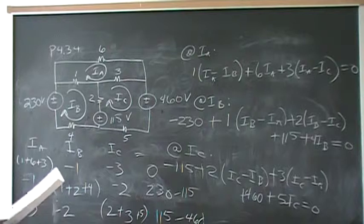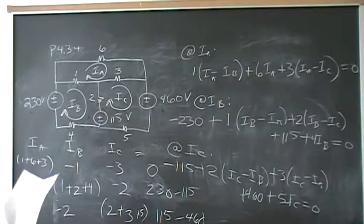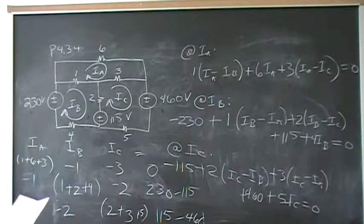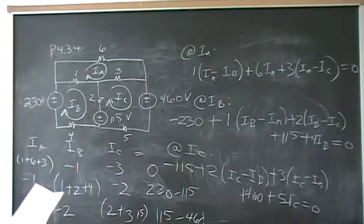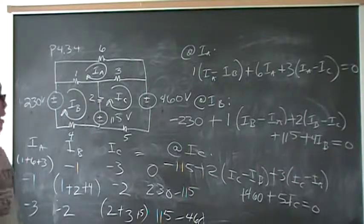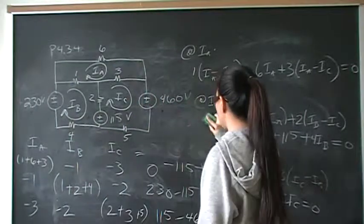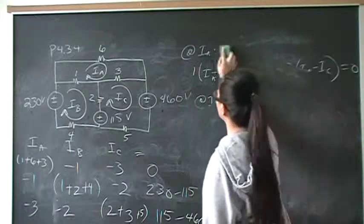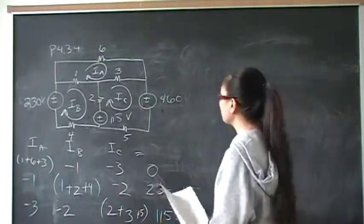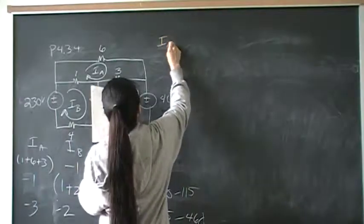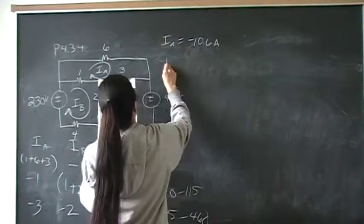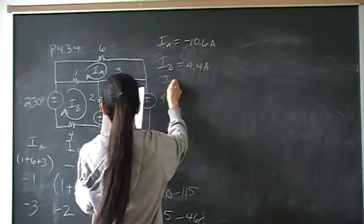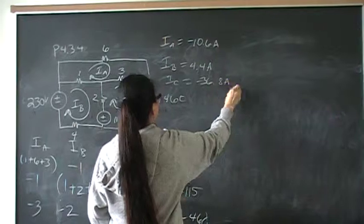Let me verify: row 1 — 1, 6, 3; minus 1; minus 3; zero. Row 2 — minus 1; 1, 2, 4; minus 2; constants 230 and minus 115. Row 3 — negative 3; negative 2; 2+3+5; constants 115 and minus 460. Go ahead and put that into your simultaneous equation solver. The answers are: IA = negative 10.6 amps, IB = 4.4 amps, IC = negative 36.8 amps.